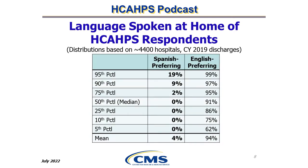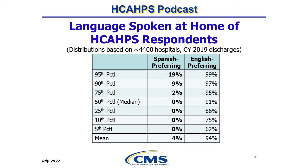This table shows the hospital distributions for language spoken at home, specifically for Spanish and English preferring patients. In the average hospital, 4% of patients are Spanish preferring while 94% are English preferring. The distribution of Spanish preferring patients among the 4,400 hospitals ranges from 0% at the 5th percentile up to 19% at the 95th percentile. Note that we only have information about preferred language for respondents.